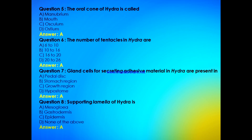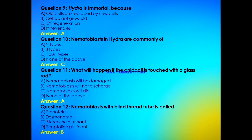The supporting lamella of Hydra is — mesoglia, gastrodermis, epidermis, or none of the above? The answer is mesoglia — the supporting lamella of Hydra is called mesoglia. Next: Hydra is immortal because — old cells are replaced by new cells, cells do not grow old, of regeneration, or it never dies? The answer is A, that is old cells are replaced by new cells.